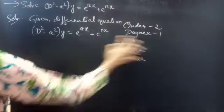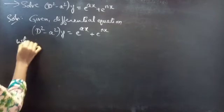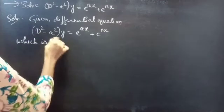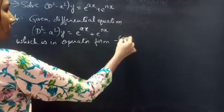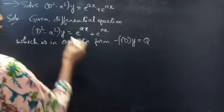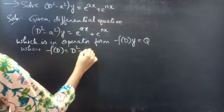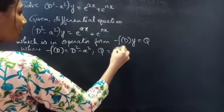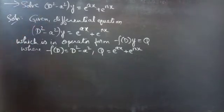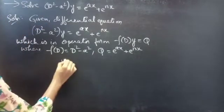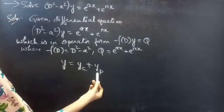We are given a differential equation in operator form f(D)·y = Q. By comparing these two, we get f(D) = D² − a² and Q = e^(ax) + e^(nx). We need to find the general solution to this non-homogeneous equation, given by y = yc + yp, where yc is the complementary function and yp is the particular integral.